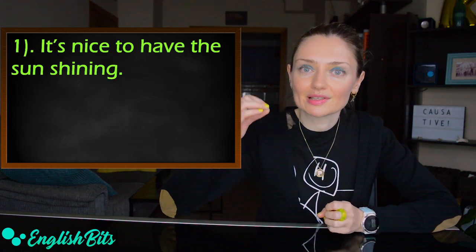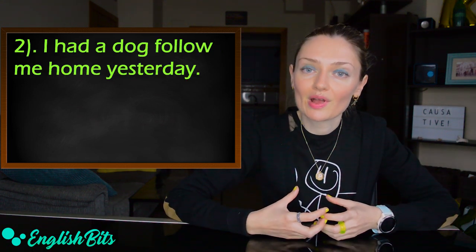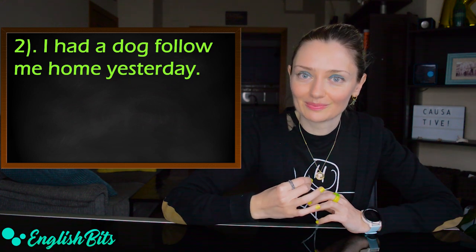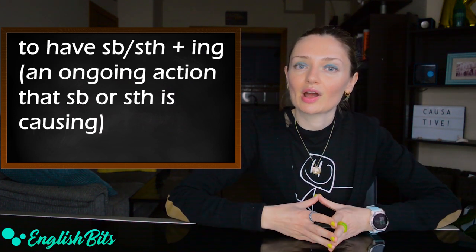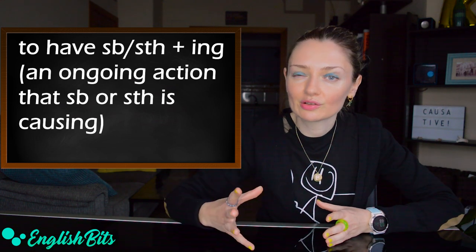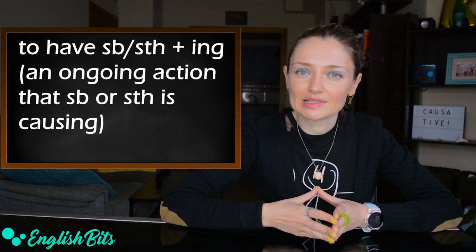Two examples: It's nice to have the sun shining. Not today, unfortunately. And one more example: I had a dog follow me home yesterday. And one more thing: we can also use ing to describe an ongoing action that something or someone is causing.